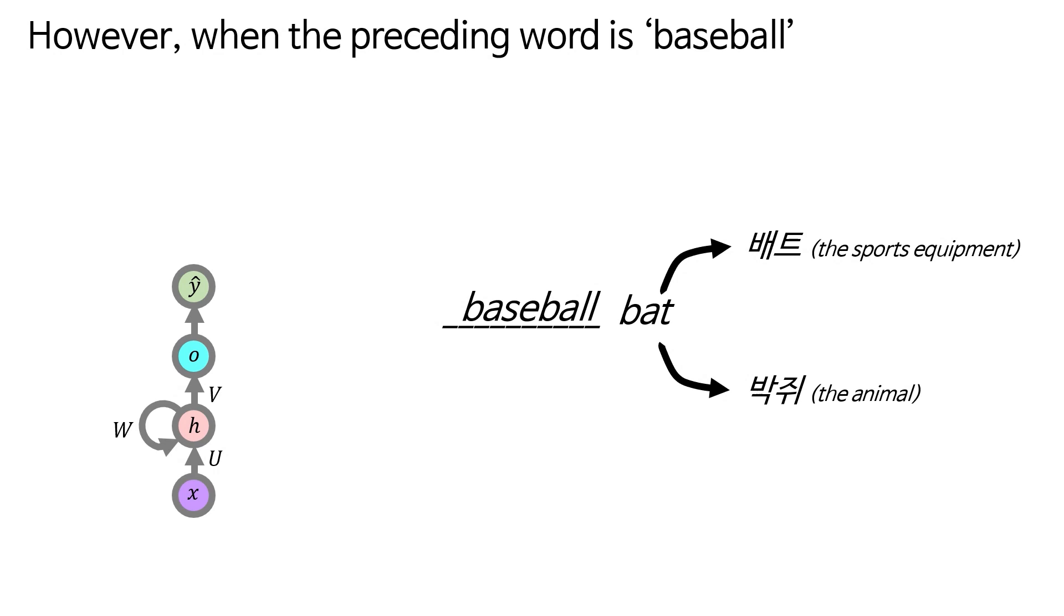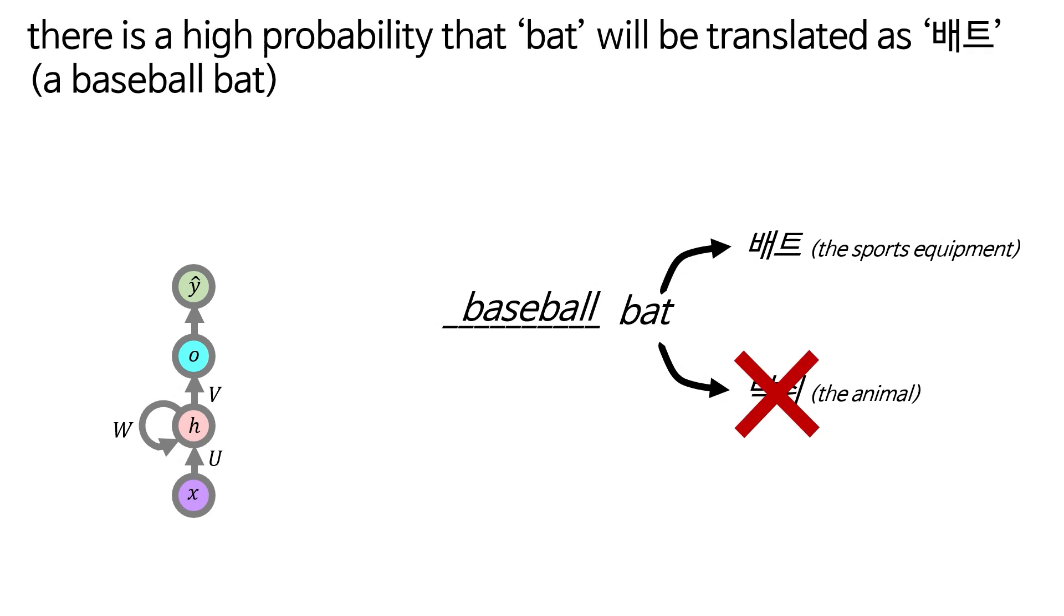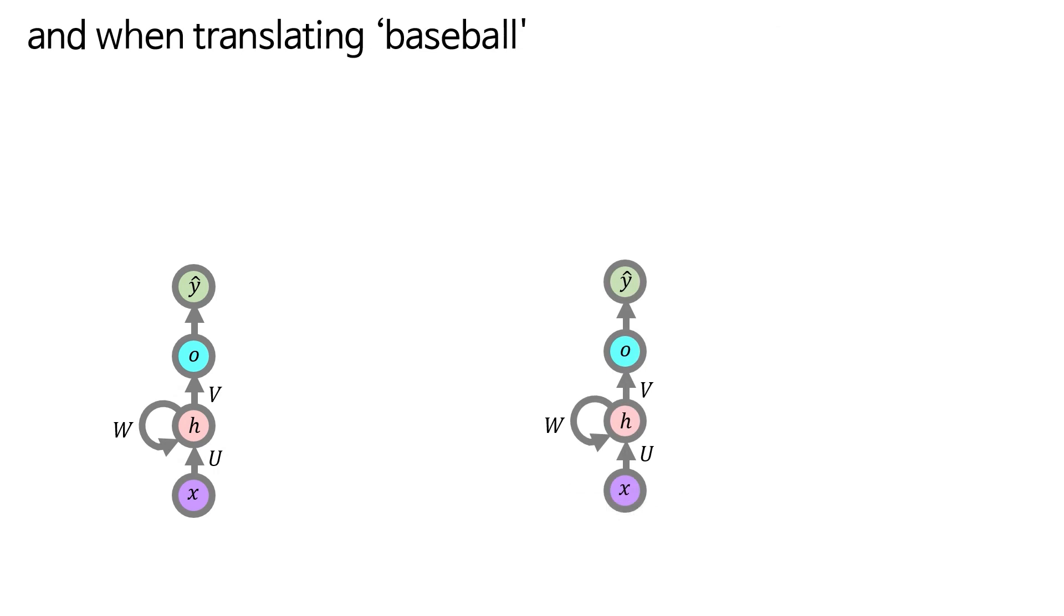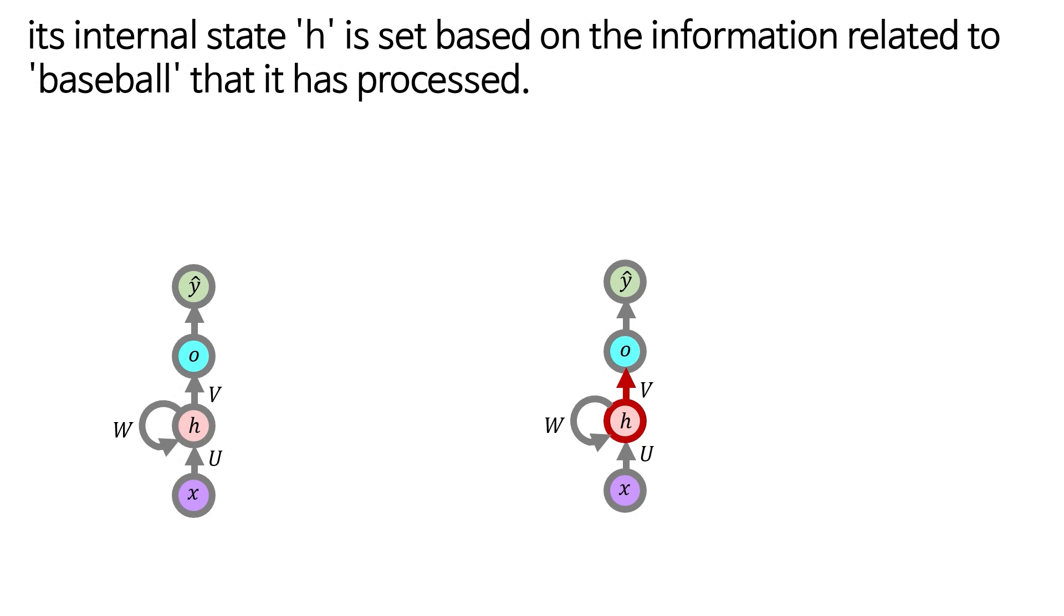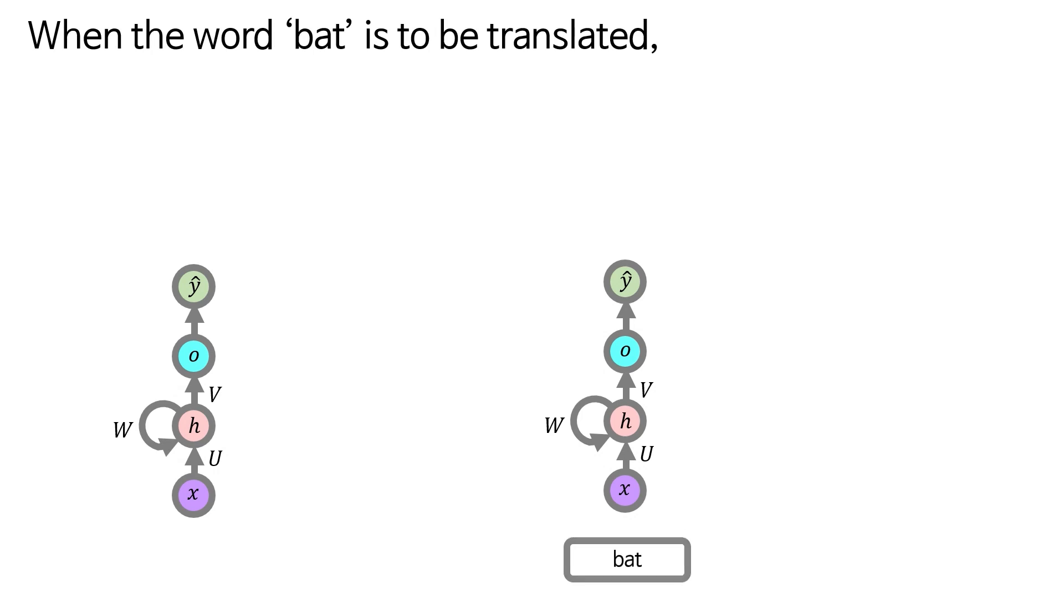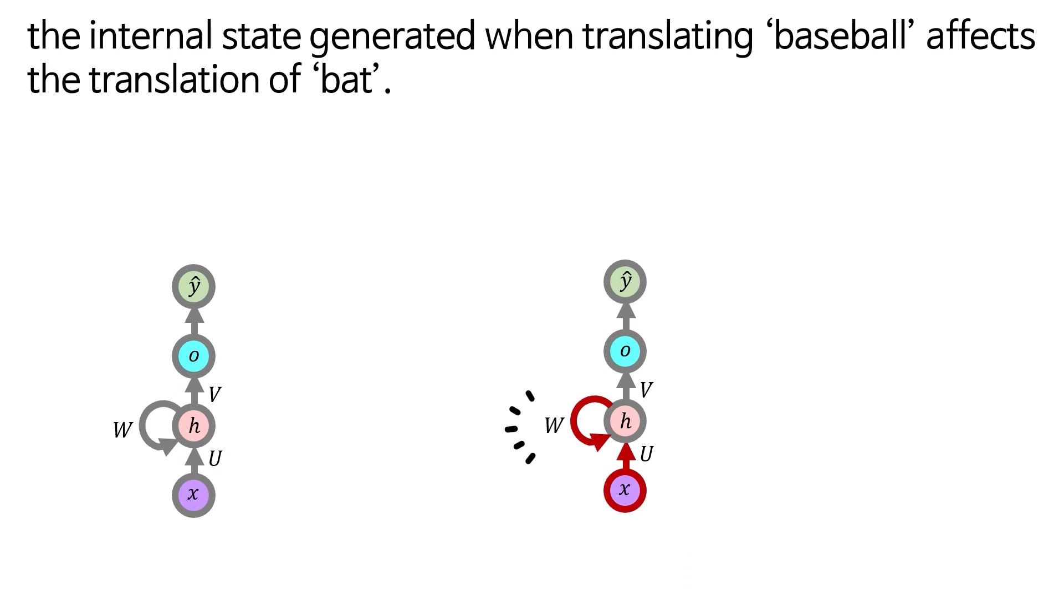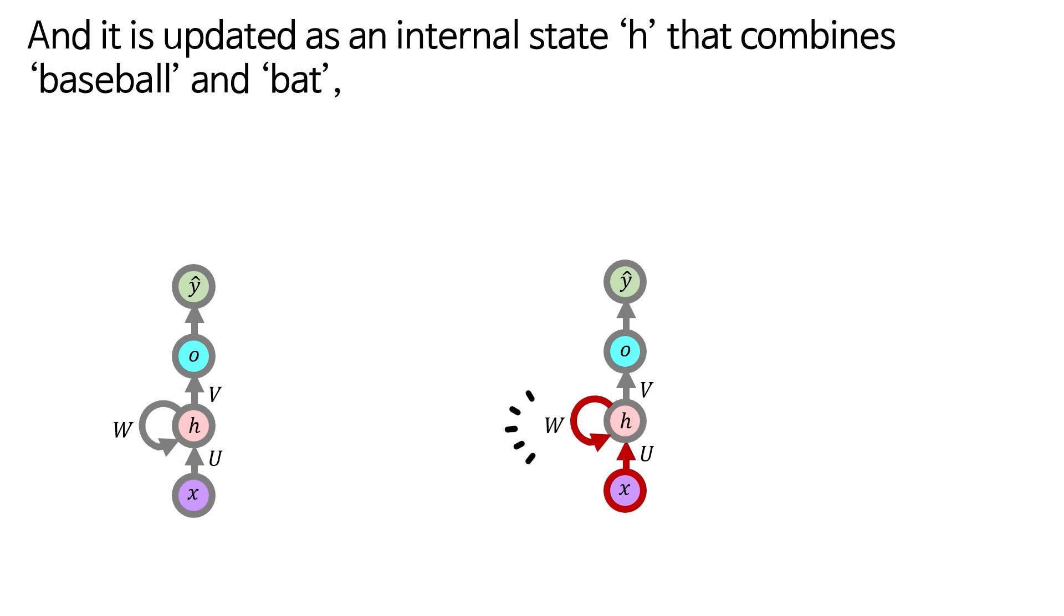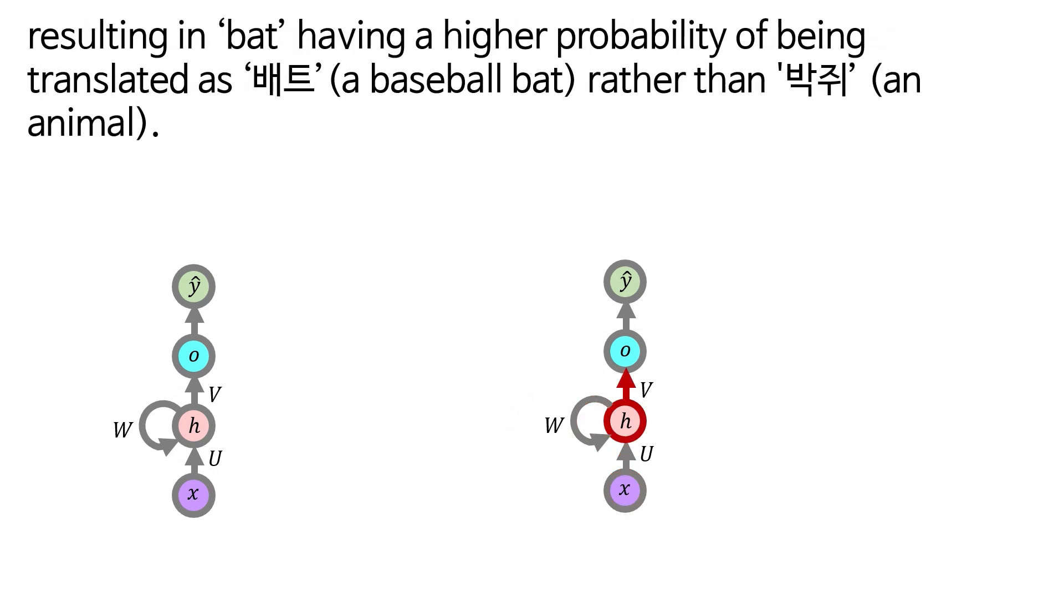However, when the preceding word is baseball, there is a high probability that an English word bat will be translated as a Korean word bat, a baseball bat. In this way, RNN mimics the brain's ability, memory, and when translating baseball, its internal state h is set based on the information related to the baseball that it has processed. Through this internal state, baseball is translated into yagu, and when the word bat is to be translated, the internal state generated when translating baseball affects the translation of bat. This is the essence of RNN, and it is updated as an internal state h that combines baseball and bat, resulting in bat having a higher probability of being translated as bat, a baseball bat, rather than the bakjwi, an animal.